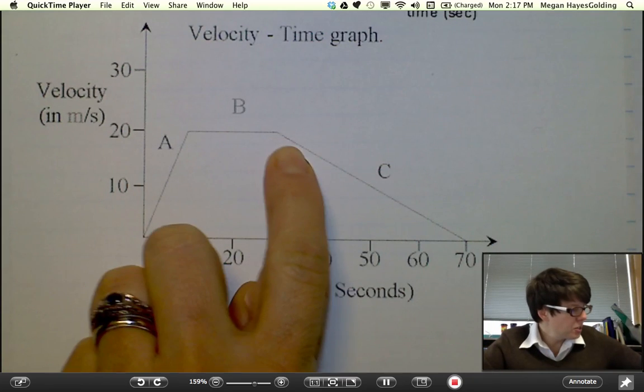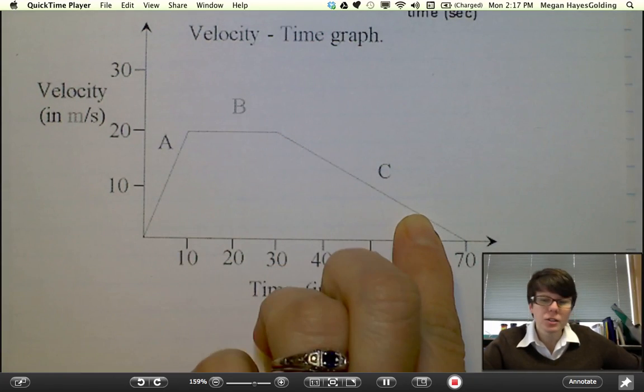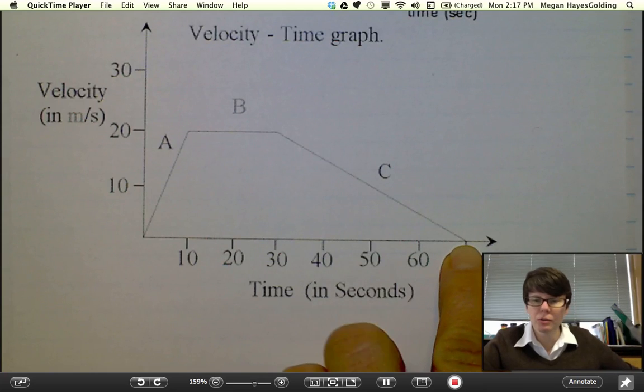Here's an example of a decreasing velocity. The velocity numbers are approaching 0 until 70 seconds.